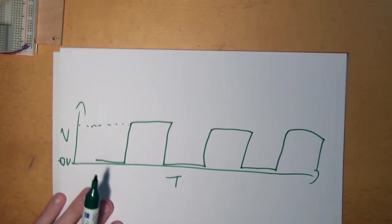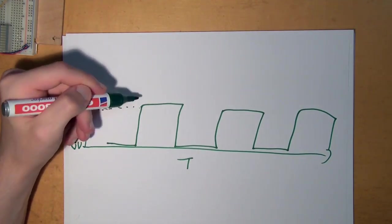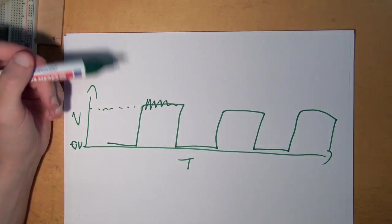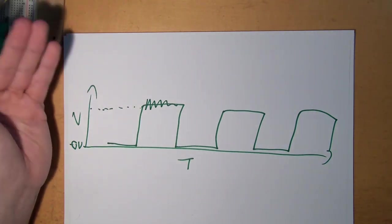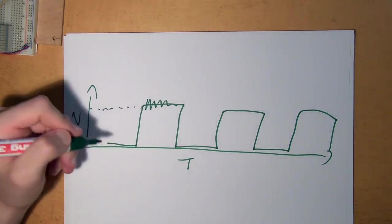And also, this doesn't look so neat in reality. It's maybe more like this. It goes up and down a little bit. Maybe your supply voltage goes up or down a little bit and then this goes up and down too.